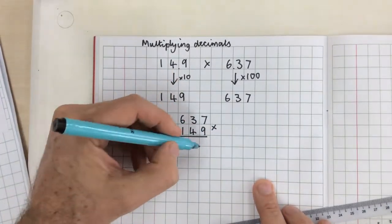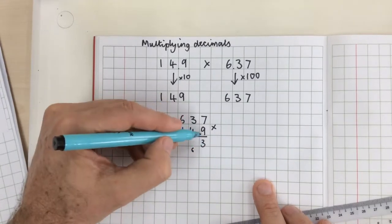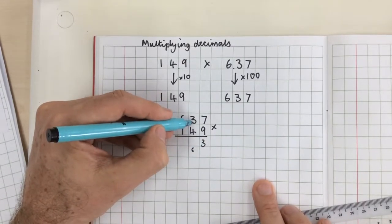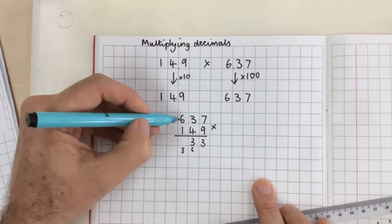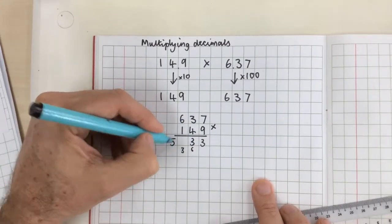9 times 7 is 63. 9 times 3 is 27, plus 6 is 33. 9 times 6 is 54, plus 3 is 57.